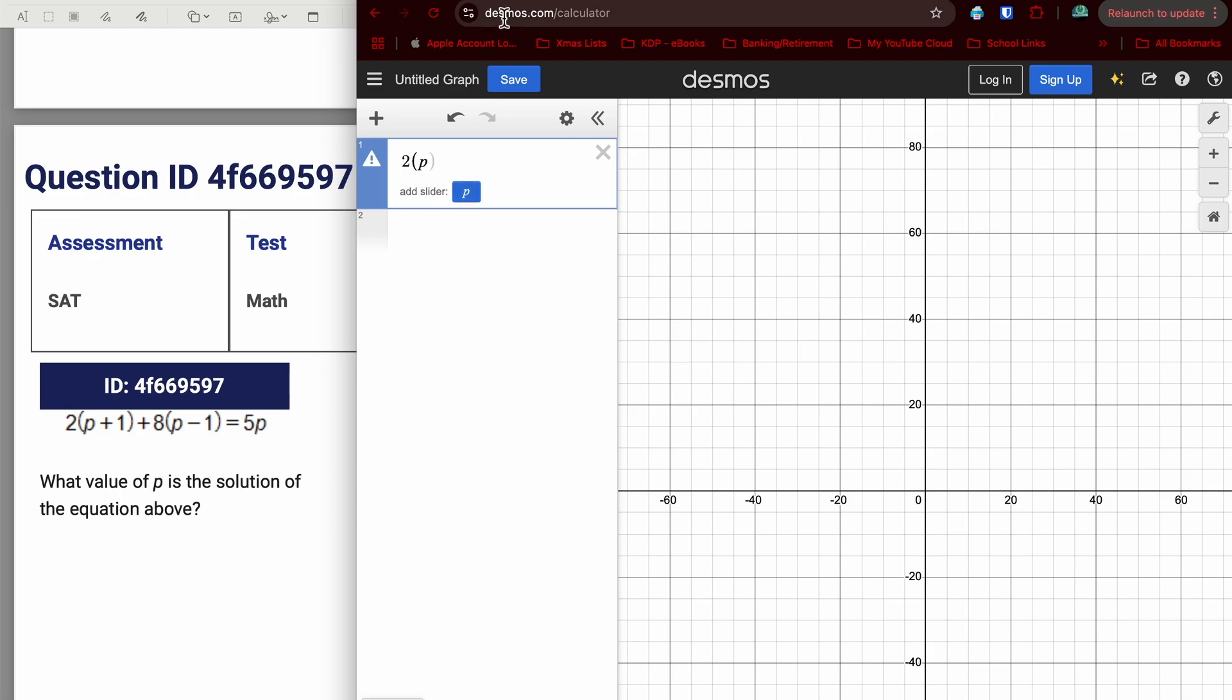So if I were to start typing in two parentheses P, as soon as I put that P in there, it asks for a slider. Well, really, this is an equation and it should be X's. Like we are used to seeing X's there. If I change the variable to X, then it doesn't ask me for a slider, which is good.